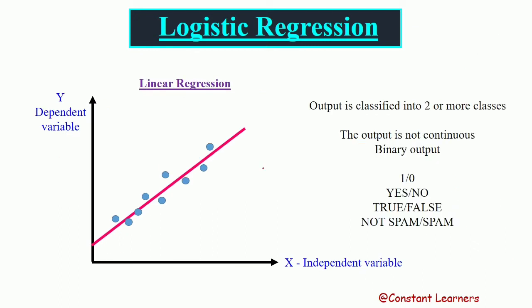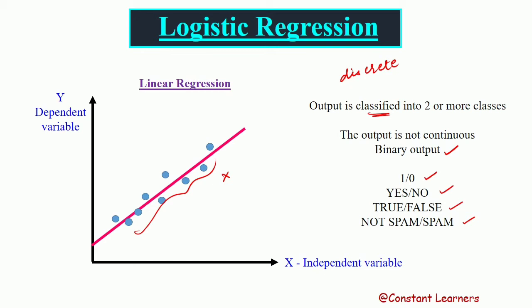But this is not the case for logistic regression. In logistic regression, the output is not continuous. Rather, the output is classified into two or more classes. Let's consider two classes right now, so we can say that our output is binary in nature — because we are classifying our output into two classes. That is one or zero, yes or no, true or false, not spam or spam. We are classifying our data into two categories, and this is logistic regression. The main concept is that our output is not continuous; rather, our output is discrete, classified into two categories.